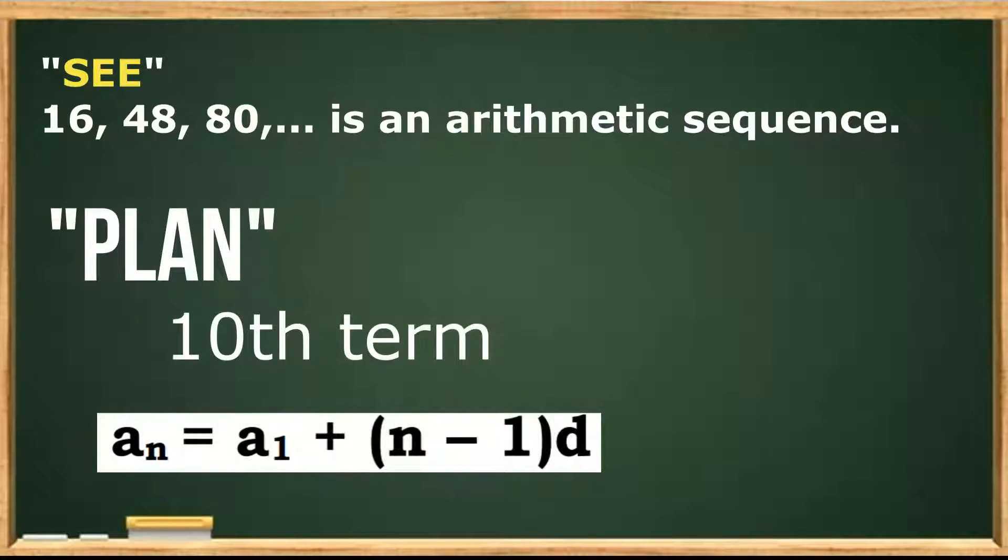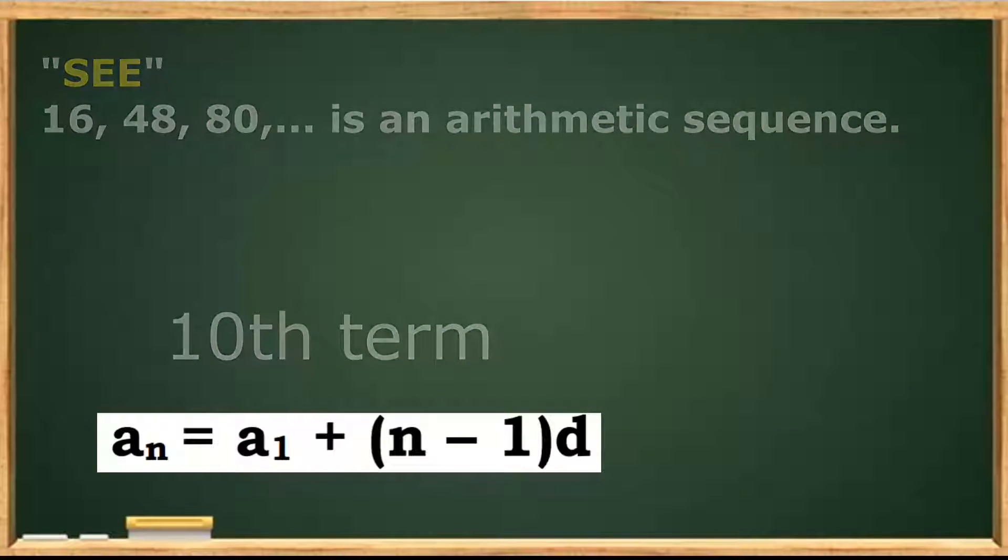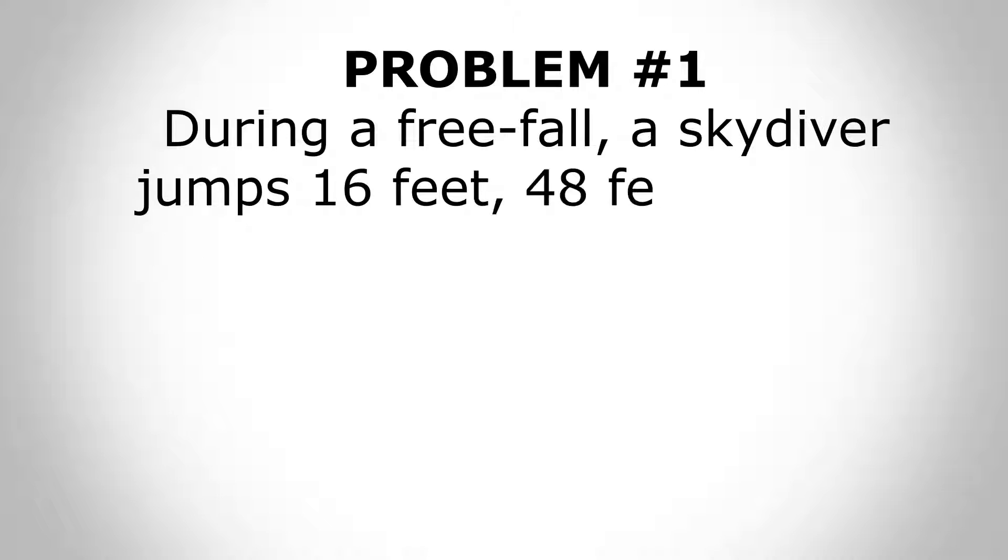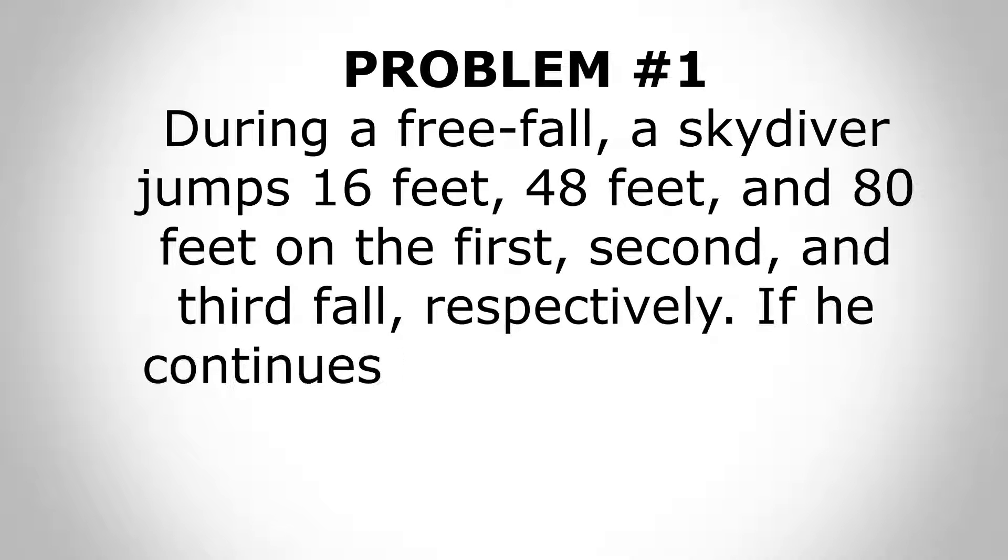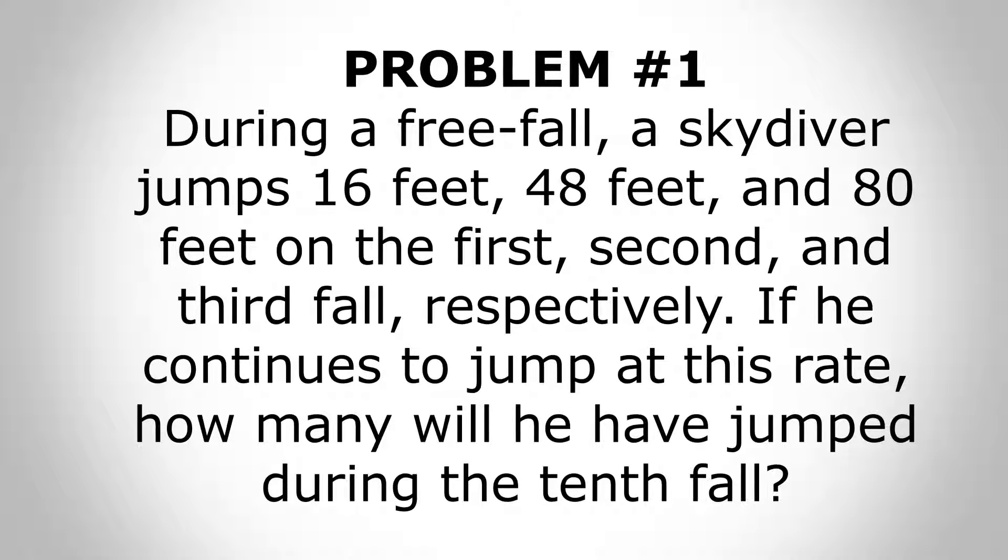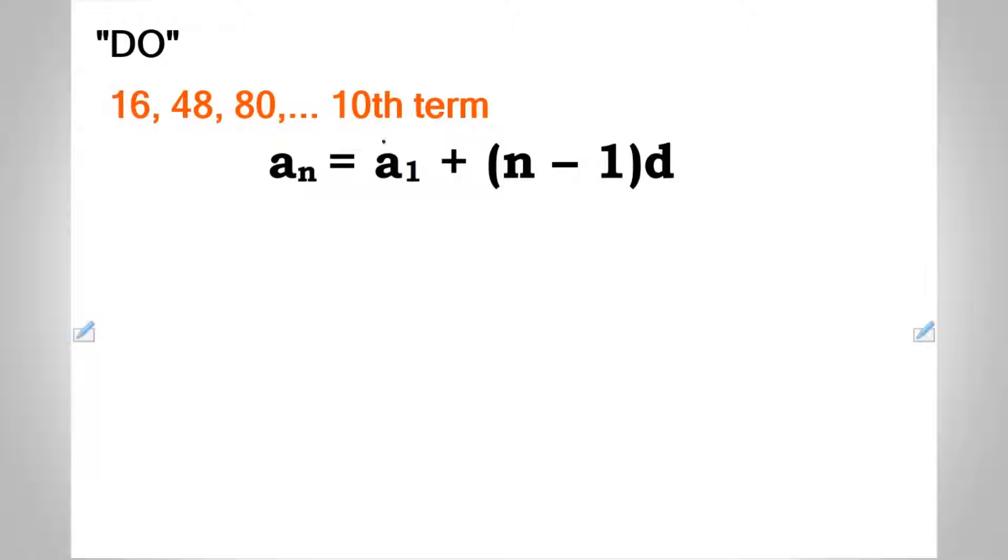Hence we will find it using the nth term formula. Now looking again to the problem, let's do the solution. Obviously, analyzing the given sequence, we are asked to find a sub 10, given a sub 1 as 16, the common difference as 32, and n equals 10.